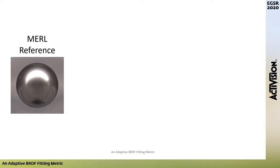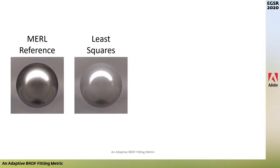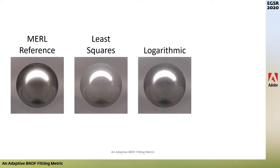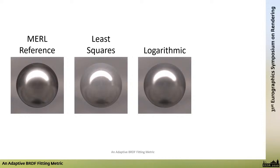Here is the nickel material from the Merle database rendered on a sphere under the Uffizi Gallery light probe. Nickel is a challenging material to model. A simple least squares fit of the Cook-Torrance model does not usually give a visually accurate result — the diffuse component is clearly much too strong. Lowe et al. introduced a logarithmic fitting metric, since the specular highlight dominates least squares by being orders of magnitude larger. This led to a major improvement in BRDF fits. Can we do better?